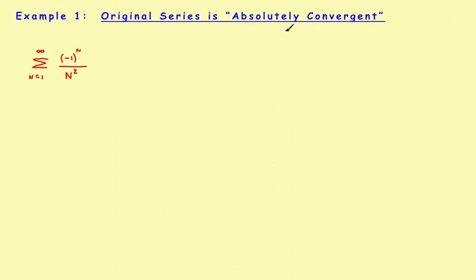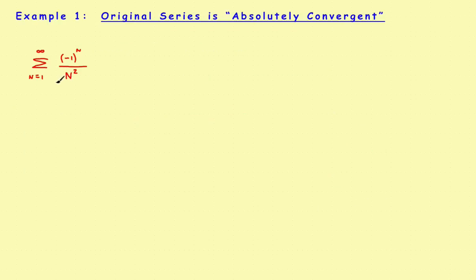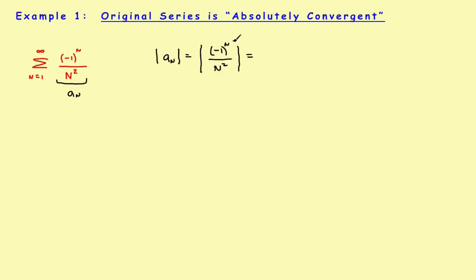Let's look at three examples. In the first example, the series is absolutely convergent. The original series is a sub n — let's say it's something like (-1)^n over n squared. I want to find the absolute value of a sub n. Taking the absolute value just eliminates the alternating sign, giving us 1 over n squared. That is the absolute value of a sub n — now a positive series.